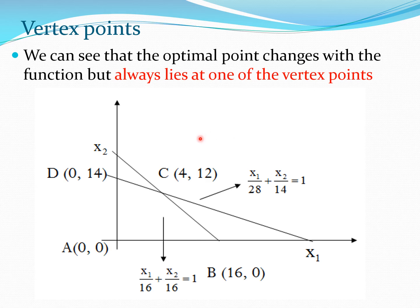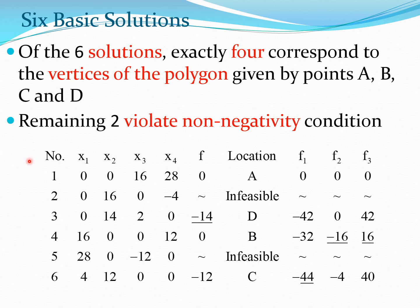One important observation is that the optimal values always lie at vertex points A, B, C, or D. Of the six possible solutions, exactly four correspond to the vertices of the feasible polygon. The remaining two violate the non-negativity constraints and are therefore discarded.